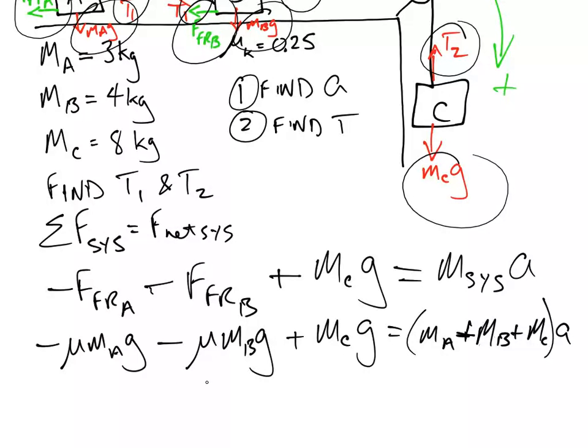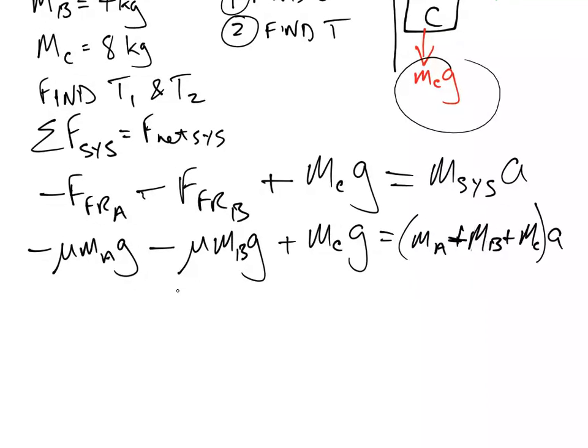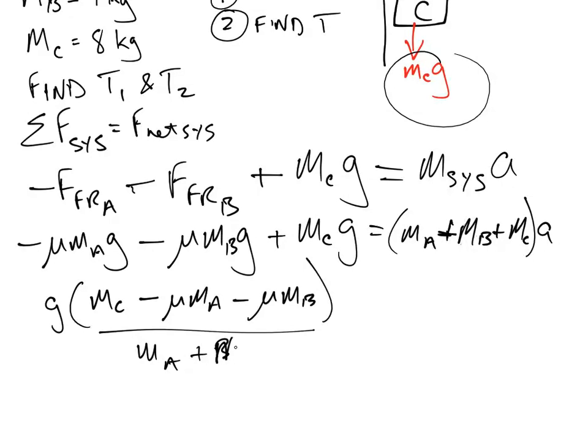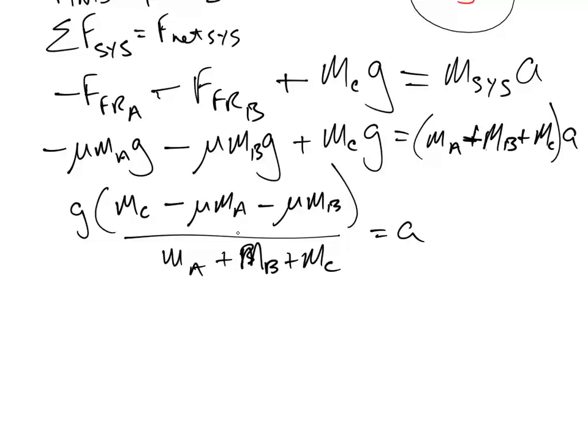Now, let's try and simplify this a little bit. So we're going to, what can we factor out? Well, we can factor out g. So let's go g times mC minus μ mA minus μ mB divided by mA plus mB plus mC. That's going to equal a. So let's plug in our numbers.